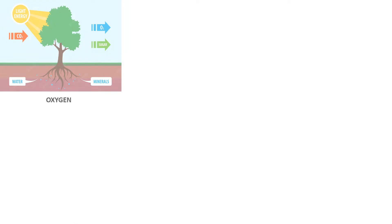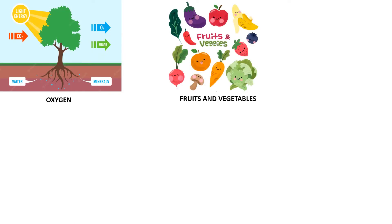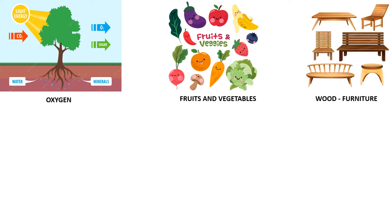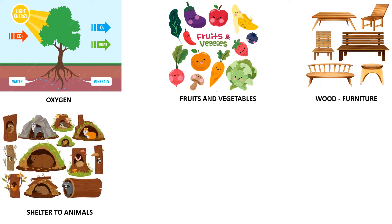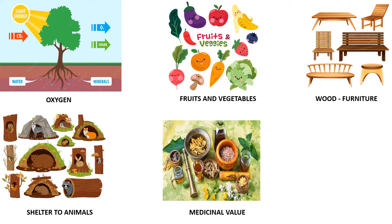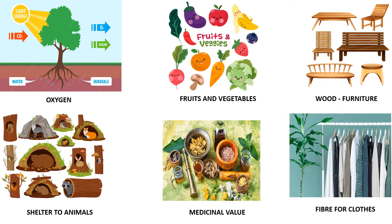Plants are very useful. They make air pure by releasing oxygen. They give us food, fruits, and vegetables. They give us wood with which furniture is made. They provide shelter to many animals. Also, some plants are used for making medicines and perfumes. They also give us fibers with which clothes are made.